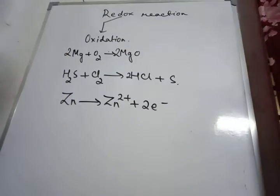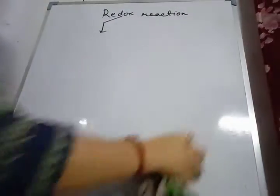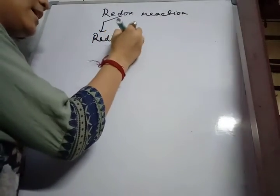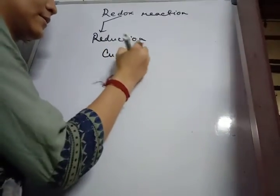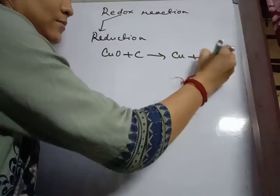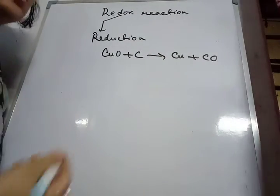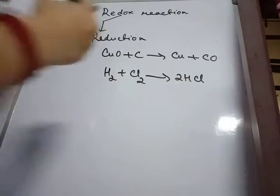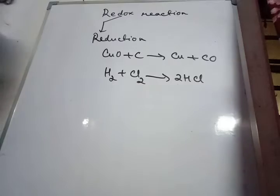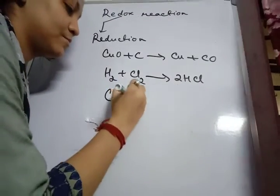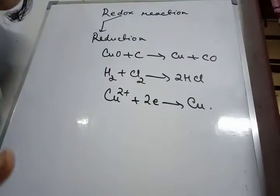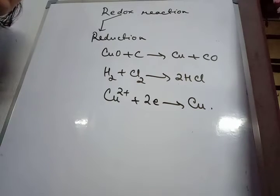Next we come to reduction. Reduction involves removal of oxygen. Next, reduction involves addition of hydrogen. And the last one: reduction involves gain of electrons. So these are the few definitions of reduction and oxidation in terms of hydrogen, oxygen, and electrons.